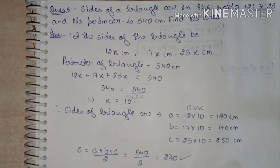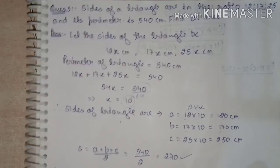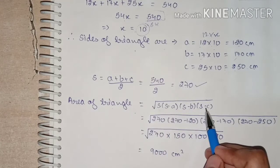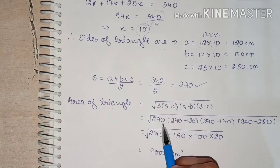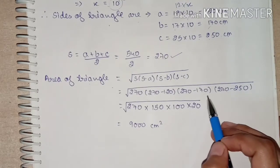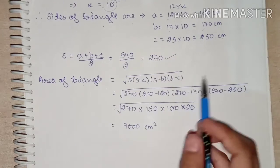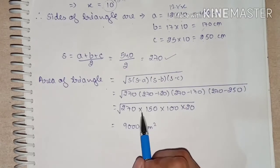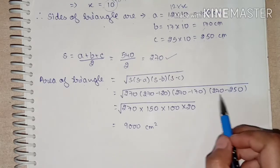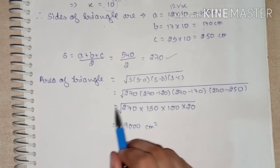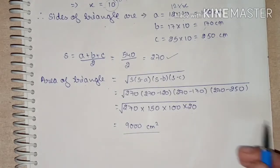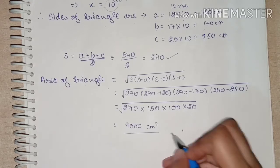Now applying Heron's Formula: Area = √(s·(s−a)·(s−b)·(s−c)). Substituting: s = 270, s−a = 270−120 = 150, s−b = 270−170 = 100, s−c = 270−250 = 20. Multiplying these values and solving gives Area = 9000 cm², which is the area of our triangle.